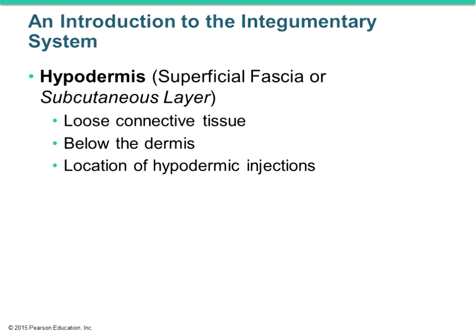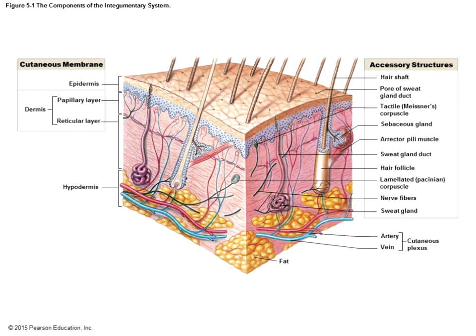Beneath the true cutaneous membrane of the skin we have what's called the hypodermis — below the dermis. We also refer to it as the subcutaneous layer or sub-Q. This is more loose connective tissue, primarily adipose tissue, and it's the location for hypodermic injections.